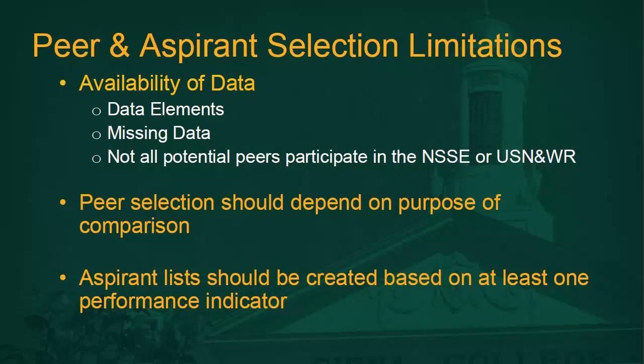There are some limitations to peer and aspirant studies. First, the data elements for comparison might not be available or missing, possibly because the institution does not participate in the NSSE or US News and World Report college rankings. Also, your peer selection should depend on the purpose of the comparison. Aspirant institutions should depend on at least one key performance indicator, for example graduation rates or retention rates.